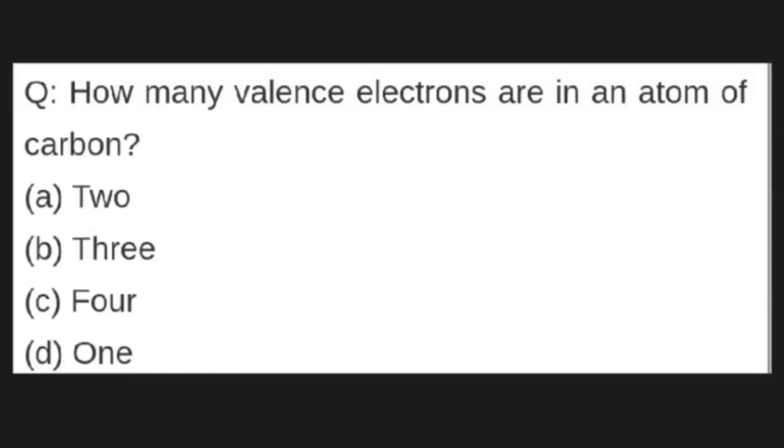How many valence electrons are in an atom of carbon? Options are A: Two, B: Three, C: Four, D: One. Correct answer is C: Four.